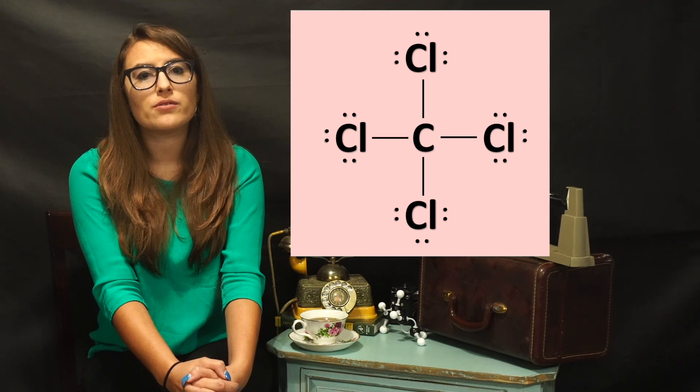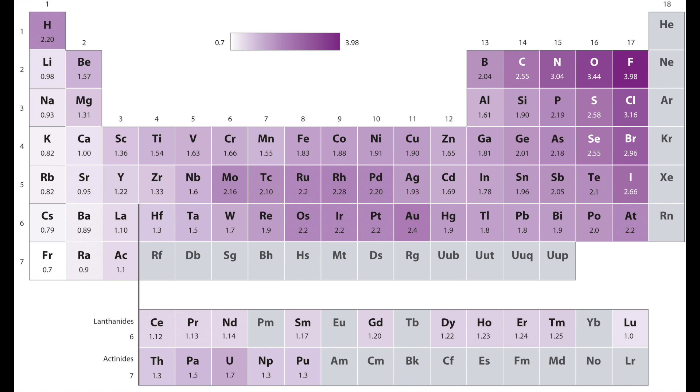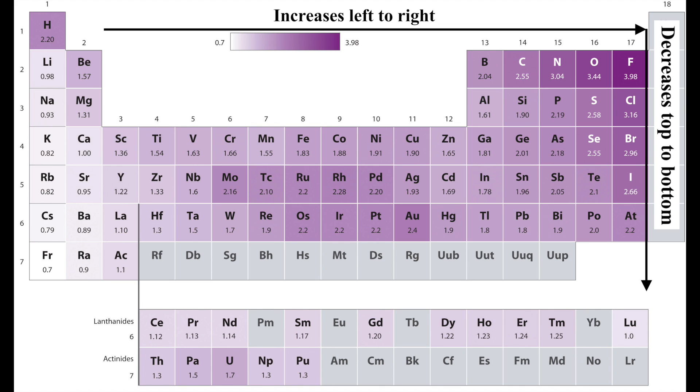The following table displays the electronegativity values for elements in the periodic table and it is important to remember these are relative values. Overall, electronegativity follows a similar periodic trend to electron affinity with an increase as you move left to right and a decrease as you move down the periodic table. This means that halogens have the highest electronegativity and group 1 and 2 metals have the lowest.